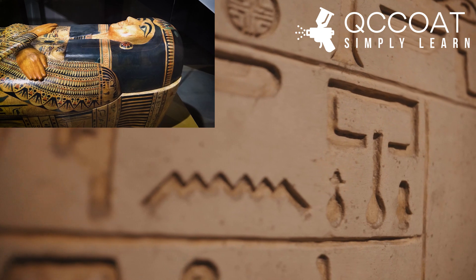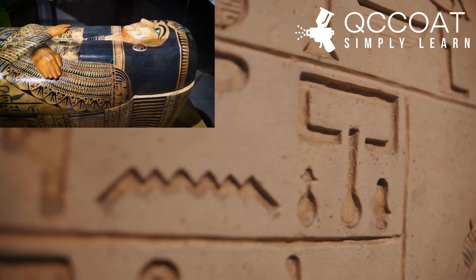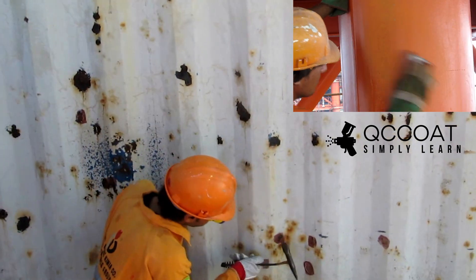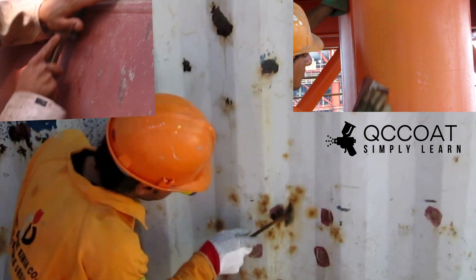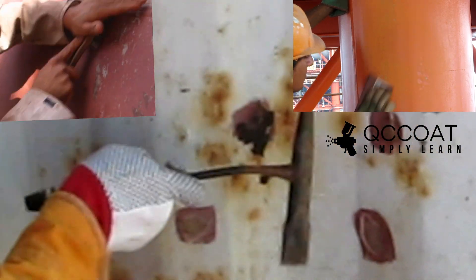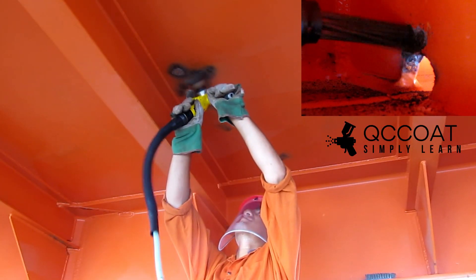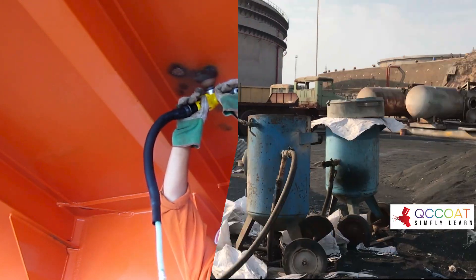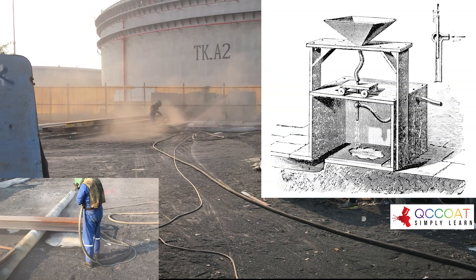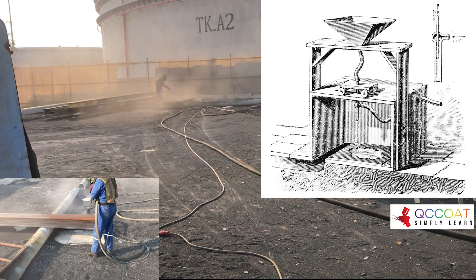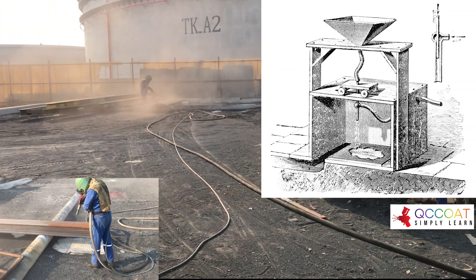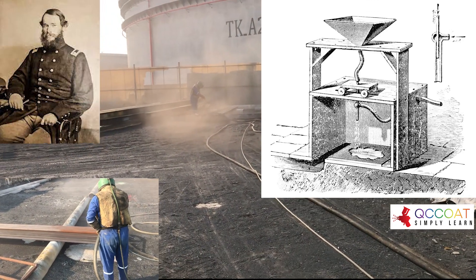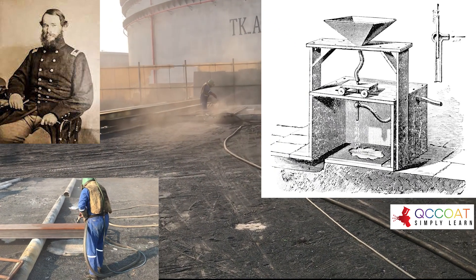The history of surface preparation dates back to ancient times when people used various methods to prepare surfaces for painting, coating, or other treatments. One of the earliest methods was sanding or scraping the surface to remove dirt, rust, or old paint. Over time, new techniques and tools were developed to improve the efficiency and quality of surface preparation. One significant development was the invention of sandblasting, which took place in the late 1800s, and the brain behind it was an American soldier named Benjamin Chew Tilghman.